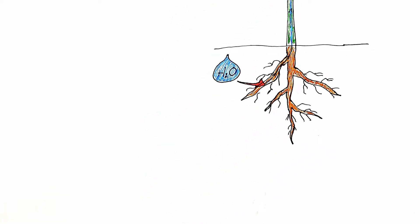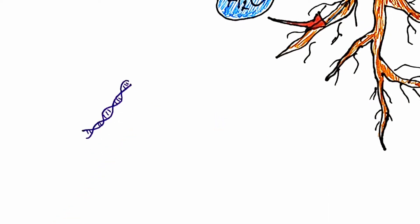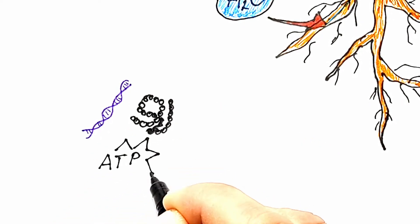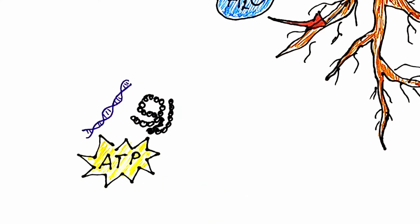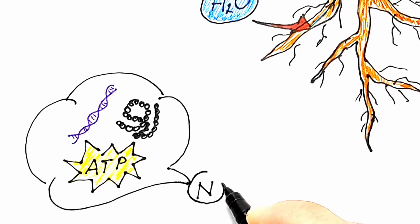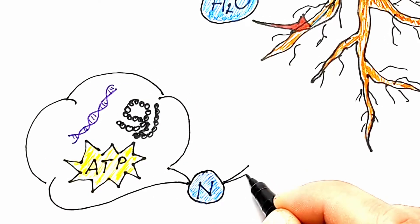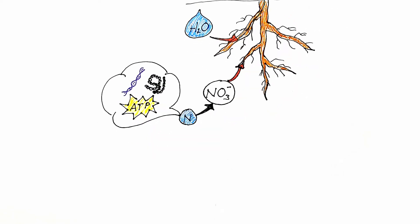For example, in order for a plant to make DNA, proteins, the high energy ATP molecule, as well as many plant hormones and coenzymes, plants need nitrogen, which is absorbed by the root system in the form of nitrates.